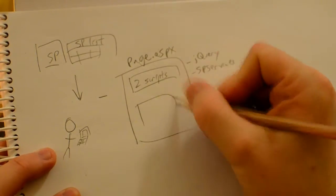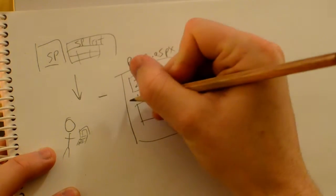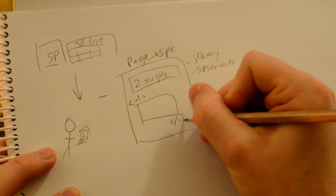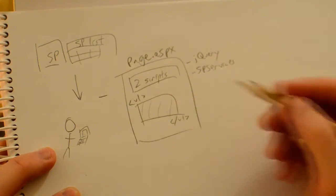And the second thing we need to do is make an empty unordered list. Just a placeholder.